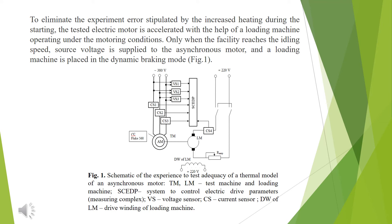To eliminate the experiment error caused by increased heating during starting and braking, the tested electric motor is accelerated with the help of a loading machine operating under motoring conditions. Only when the facility reaches idling speed is source voltage supplied to the asynchronous motor, and the loading machine is placed in dynamic braking mode. Figure 1 shows the schematic of the experiment used to test the adequacy of the thermal model of an asynchronous motor.